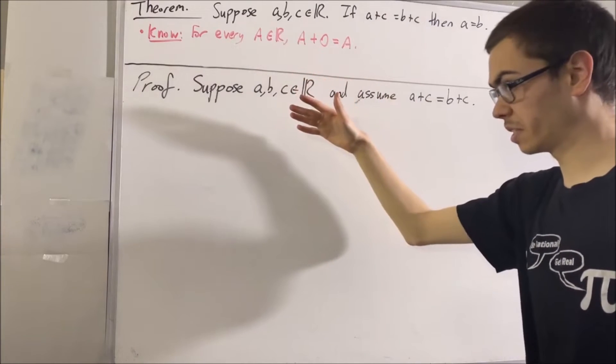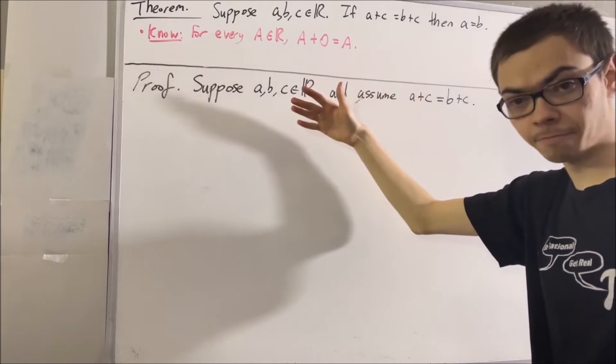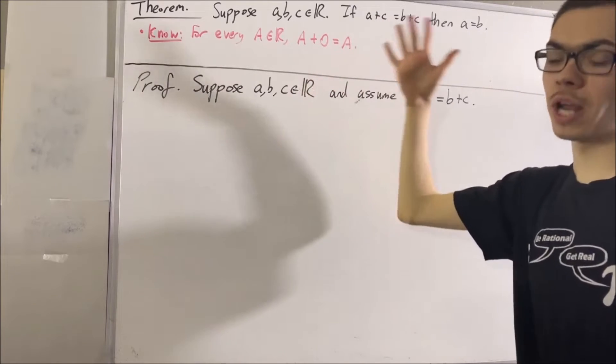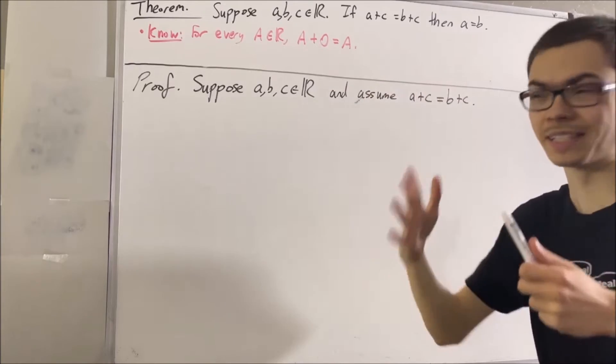And the other fact that we're going to use is that every real number has a negative. That is to say, for every real number X, there exists a real number Y such that X plus Y is equal to 0.